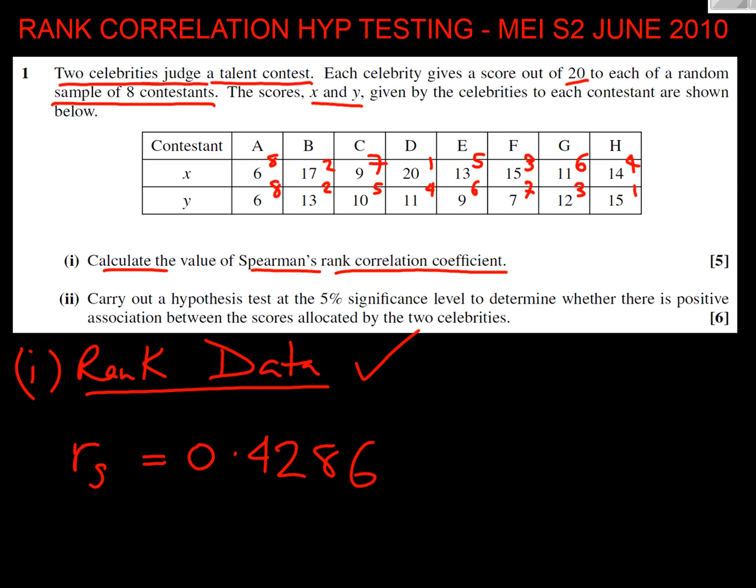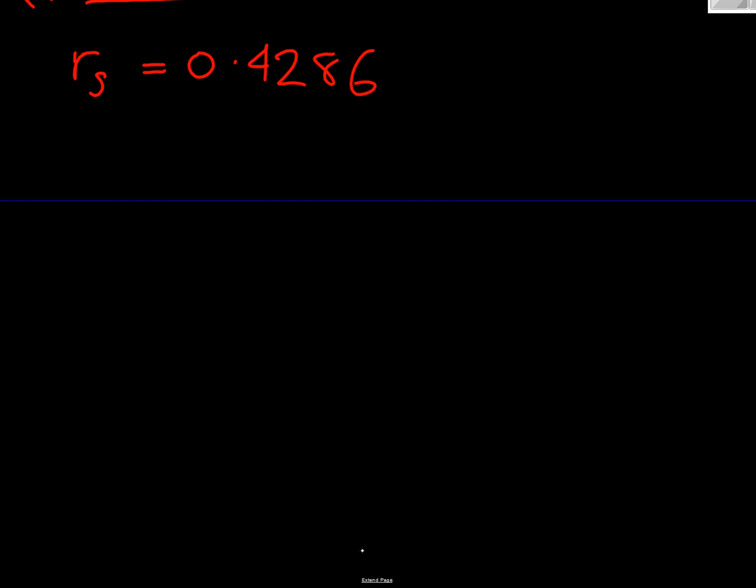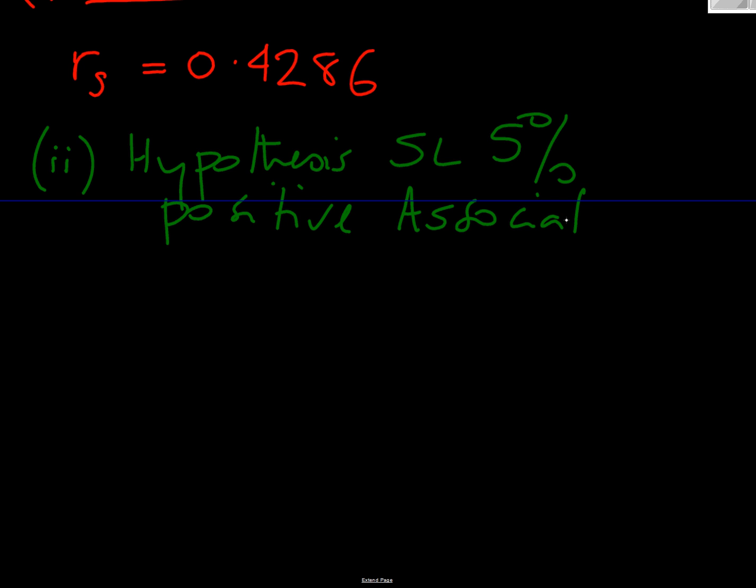What's it ask us in the next part of this question? Carry out a hypothesis test at a 5% significance level to determine whether there is positive association between the scores allocated by the two celebrities. So it's positive association. So let's get to work on this part then. Part two, we're being asked to hypothesis test at significance level 5% for a positive association.